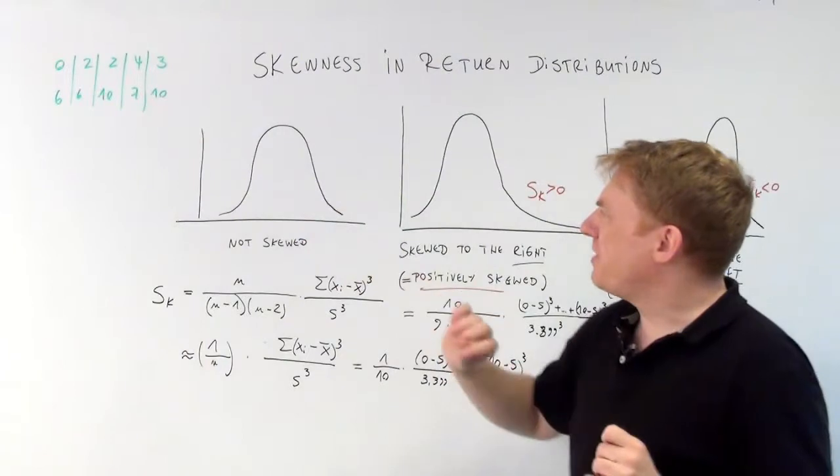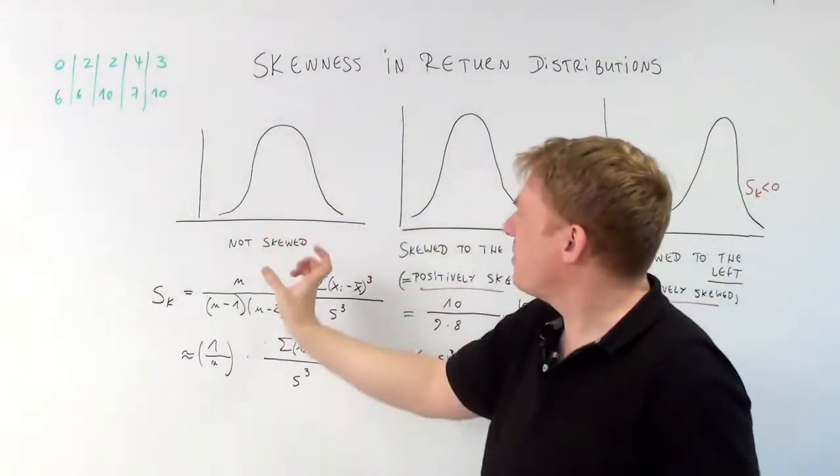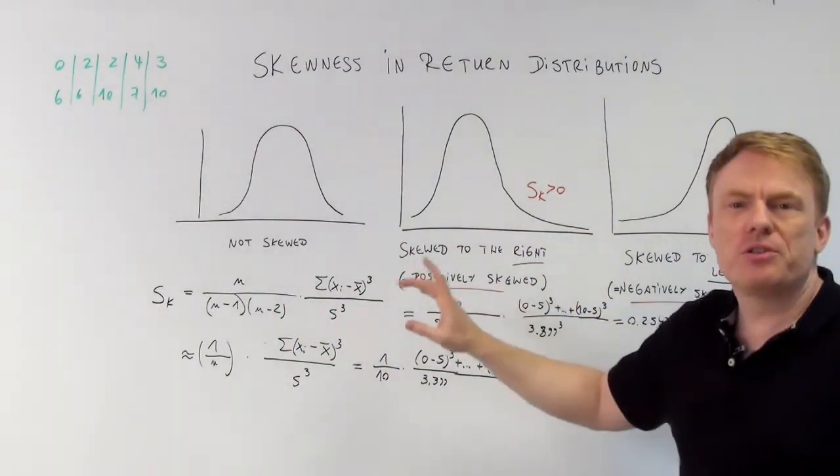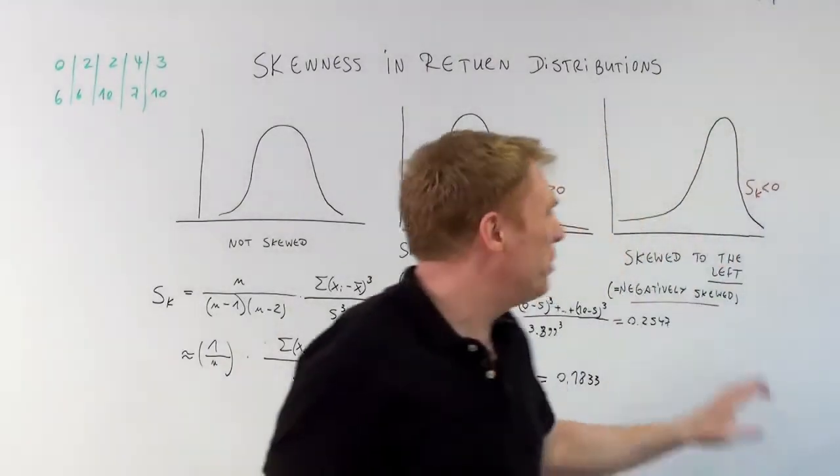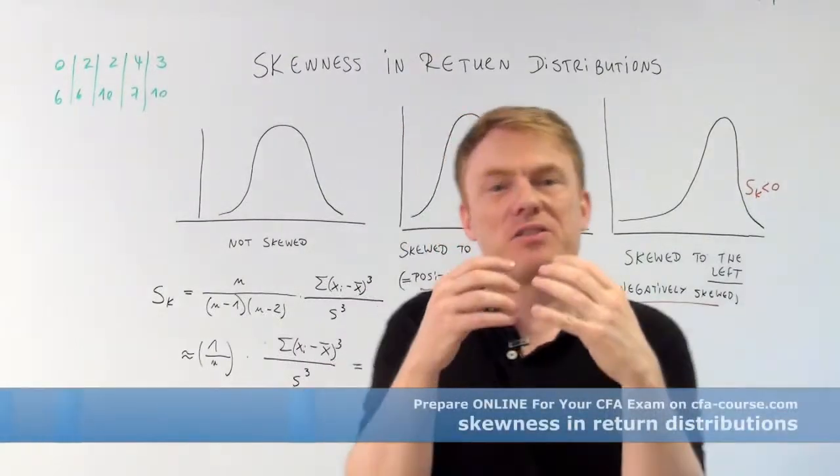Look at this graph for example. It is not skewed, it is very centered. Whereas this one is called skewed to the right, and this one is called skewed to the left because the peak is not in the center.